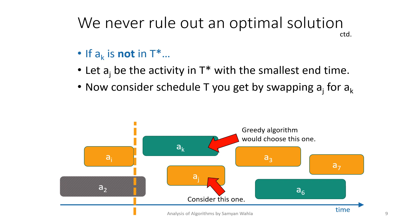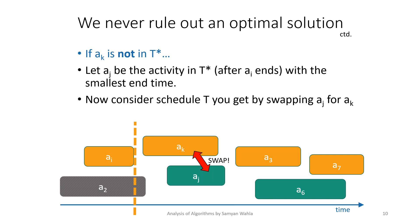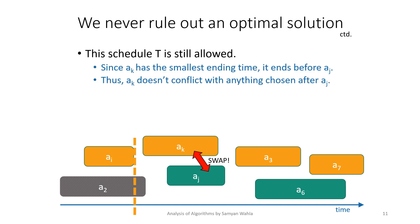Now consider the schedule T you get by swapping aj for ak. Our new optimal solution contains ak, a3, and a7. We swap these activities. We can see that ak activity does not overlap with anything, and this activity is also compatible with all those activities contained in the optimal solution. So we can say that our schedule T, which was T* containing aj, a3, and a7, is still optimal.